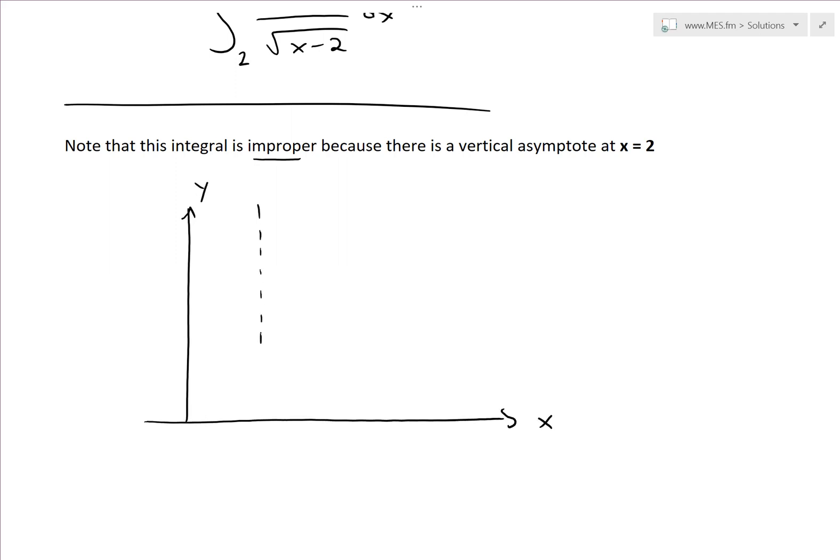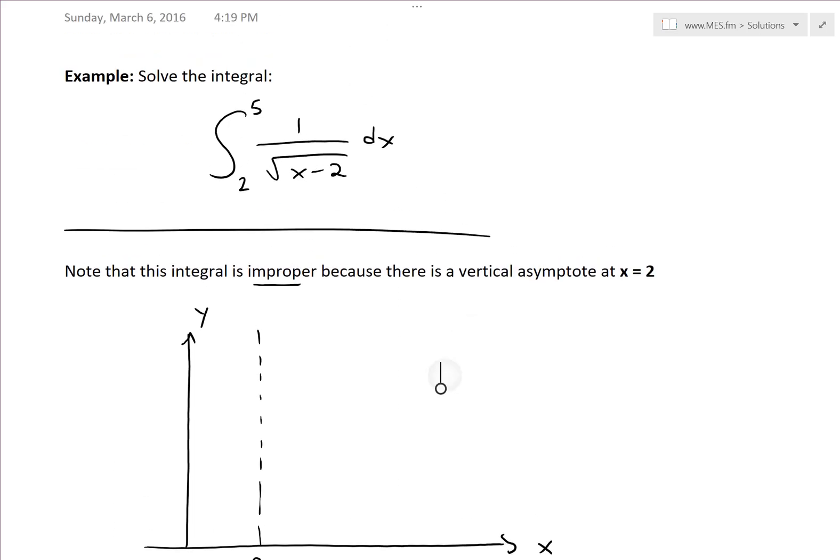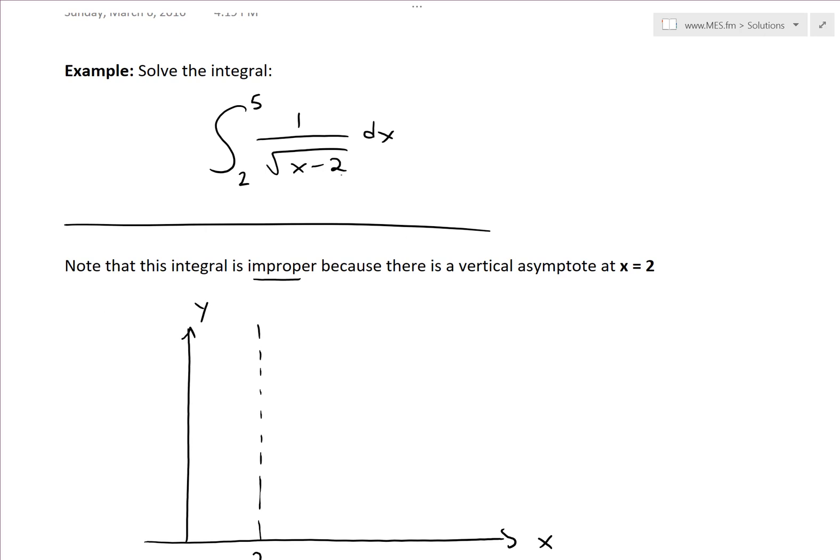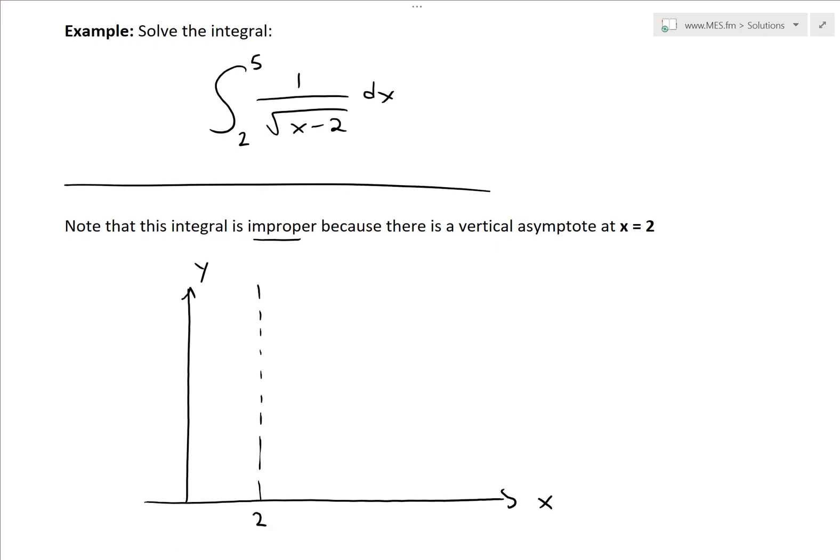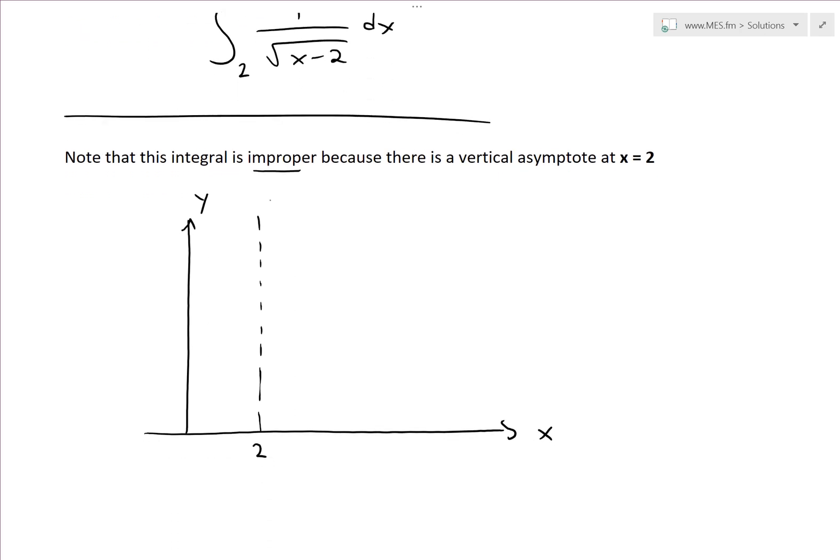There's an asymptote at x equals 2, so it goes to infinity. As you go further to the right toward 5 or beyond, this gets smaller and smaller because you're dividing by a bigger and bigger number.